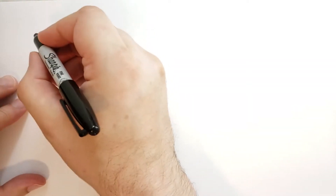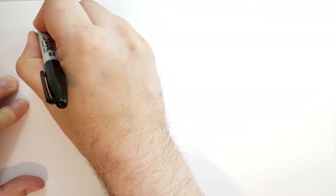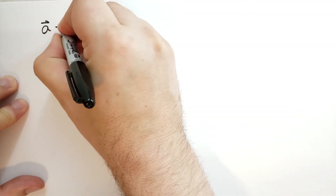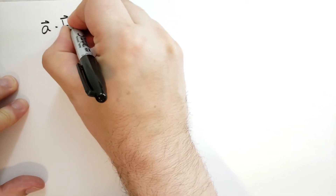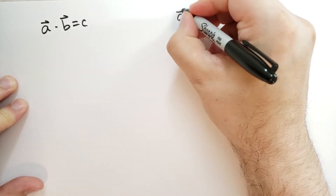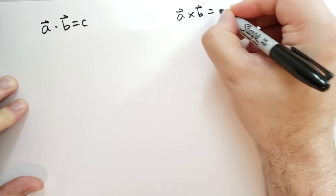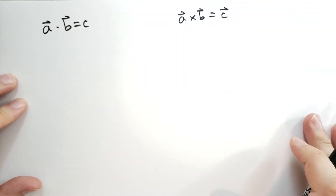You can also multiply two vectors with each other. There are two ways to do this. One is called the dot product: A vector dot B vector is going to equal a scalar C. And A vector cross B vector is going to equal another vector, C vector.